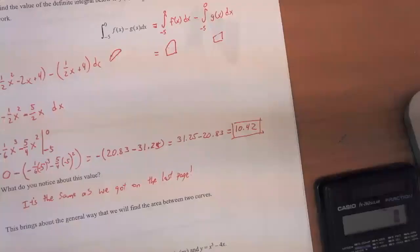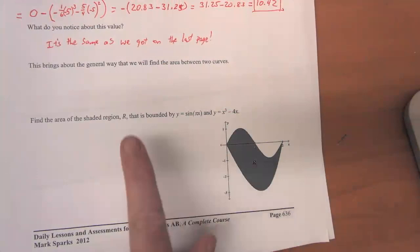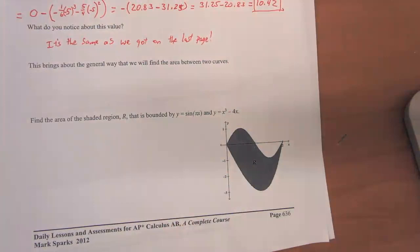Let's take a look at another problem where we're going to find the area between two curves. This is at the bottom of page 636. We want to find the area of the shaded region marked R that is bounded by y equals sine of pi x and y equals x cubed minus 4x.